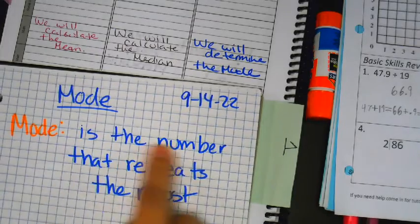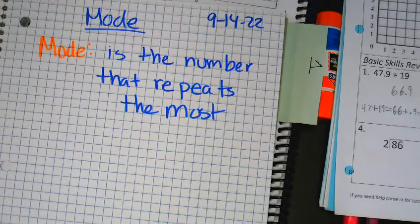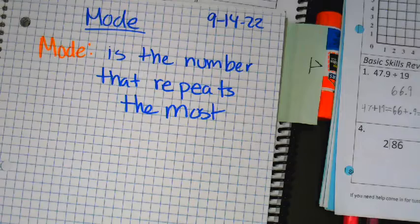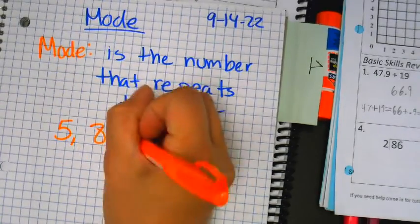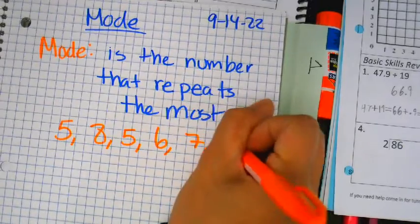Mode is the number that repeats the most. For example, if I'm giving the numbers 5, 8, 5, 6, 7, and 9.